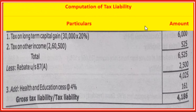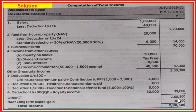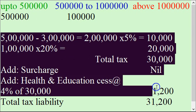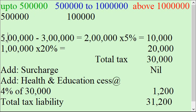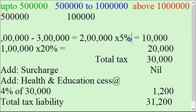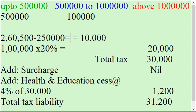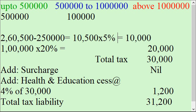Computation of tax liability. First, tax on long term capital gain: 30,000 at 20 percent equals 6,000. Tax on other income: balance of income is 2,60,500. Non-senior citizen - up to 2,50,000 exempted. Taxable balance: 2,60,500 minus 2,50,000 equals 10,500 at 5 percent equals 525 rupees tax liability.